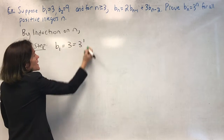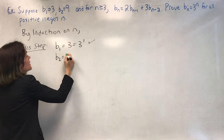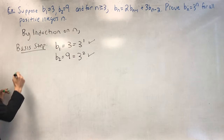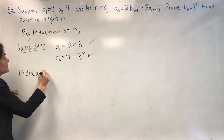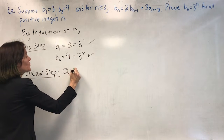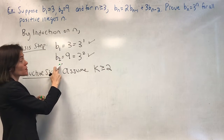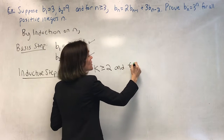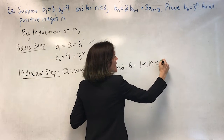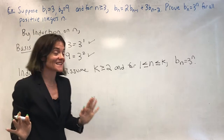b1 is 3, and that is also 3 to the 1. Then I will check one more: b2. This is 9 — it's given — and this is also 3 squared. Now for the inductive step. I'm going to use strong induction, so we assume k is bigger than or equal to 2 — the highest value we showed — and for all n with 1 ≤ n ≤ k, bn equals 3 to the n. This is the strong induction hypothesis; you have to assume the statement all the way up to k.